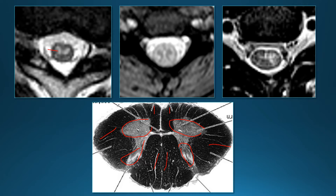When looking at a spinal cord lesion, try to identify what areas are involved. Here it looks like just the gray matter of the anterior horns. In this one the whole cord is abnormal but the white matter is a little brighter, and the gray matter is not quite as bright. In this one the right side is normal but the left side shows bright signal involving both white and gray matter.